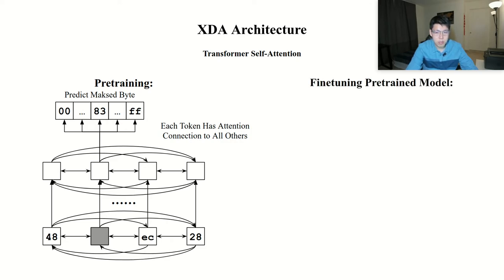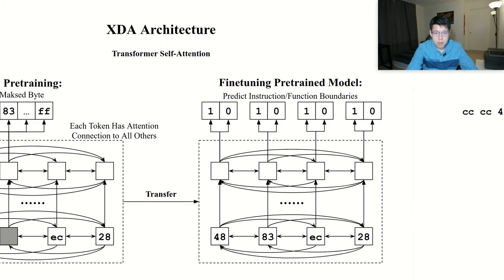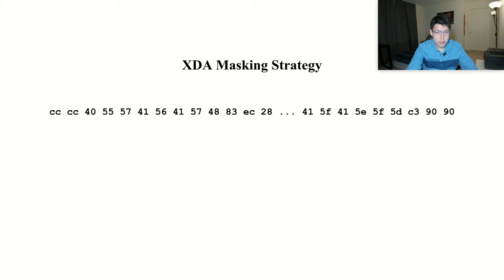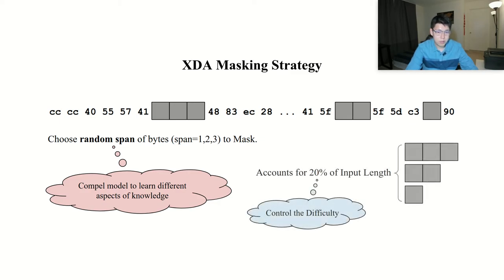After the model is pre-trained, we keep the pre-trained weights and transfer the learned knowledge for training on disassembly tasks. We develop the masking strategy with random span. Specifically, we randomly choose different spans of bytes to mask in the input sequence. The span size can vary from 1 to 3. Such a treatment creates different scenarios that compel the model to learn different aspects of machine code semantics. Moreover, we fix the total number of masked bytes to account only for 20% of the total bytes in the input. Such a treatment ensures the task is not too hard. Otherwise, it is impossible for the model to learn any meaningful knowledge. We plan to study how varying masking percentages affect our model's performance in both pre-training and fine-tuning in our future work.